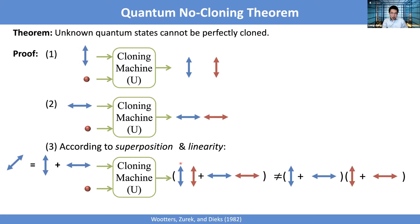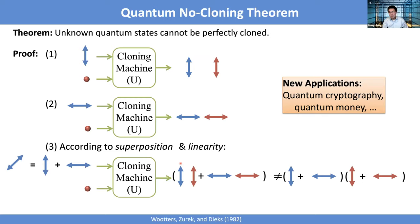On one hand, this is a negative result — you cannot perfectly clone. But from a different perspective, this is a really nice property, because there are lots of things you don't want people to clone or duplicate — such as secret messages, or in applications like quantum money, you don't want people to make counterfeits. If they cannot duplicate, then it's good.